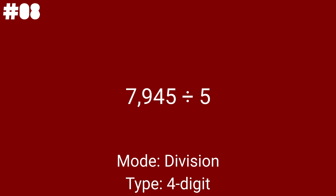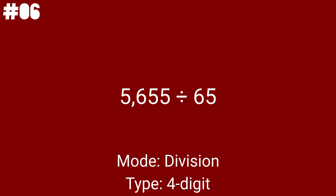7945 divided by 5 is the 48th problem, and we are at the final 8 math problems. This one has a 1-digit divisor — it's 5 again. For 3703 divided by 7, you divide the first number by our lucky number, which is 7. 5655 divided by 65 is the last division problem before we move on to the final 5 math problems, and it's the final 4-digit division problem.